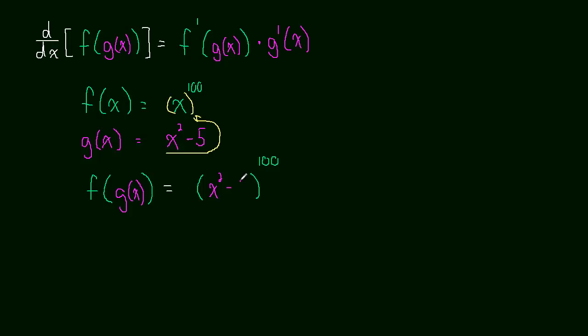x squared minus 5 to the 100th power. So we took g of x and we just plugged it in for x. So we have f of g of x. And I hope that makes sense to you. That's just a composite function.